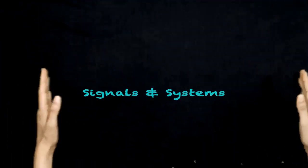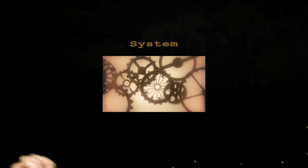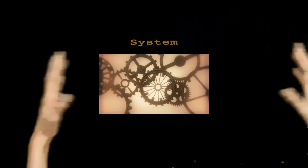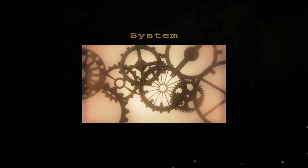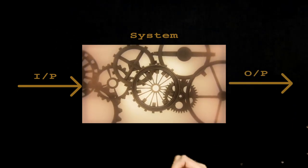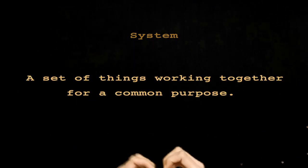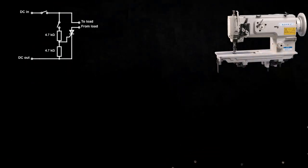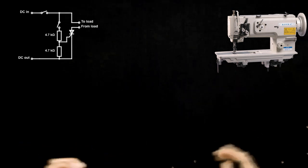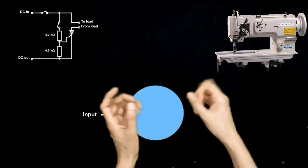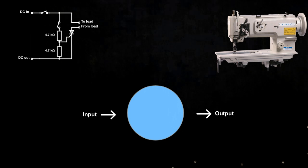Today we will discuss signals and systems. A system is a process or a set of procedures that produces an output in response to an input. As you can see, we are sending an input inside the system and we receive an output on the other hand. A system can literally be anything — a circuit, a mechanical thing — anything which takes an input, does some computations within that environment, and produces an output is actually a system.